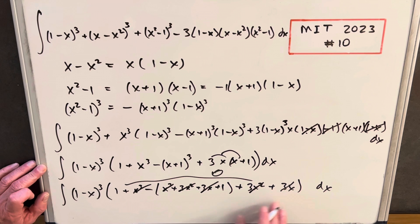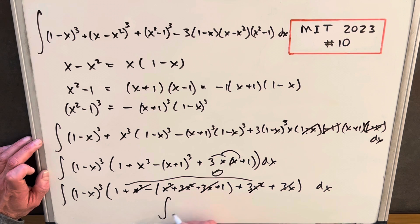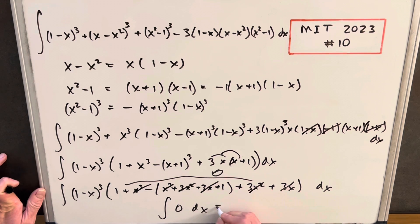So everything in the parentheses is 0, but we're just multiplying by this. So in the end, we're just integrating 0. And what's the integral of 0? It's just 0.